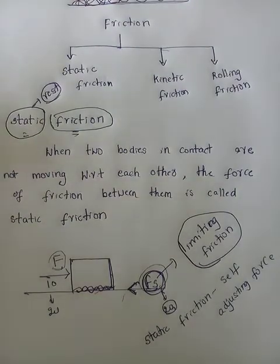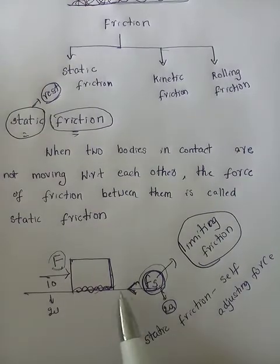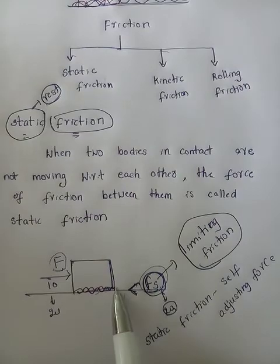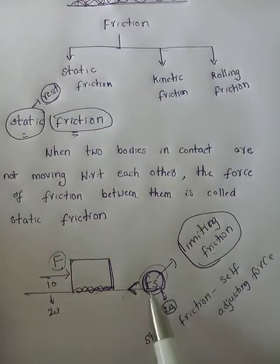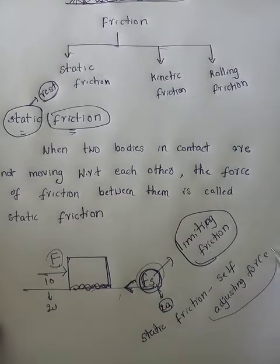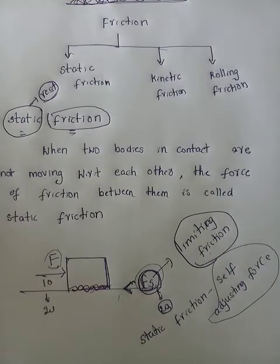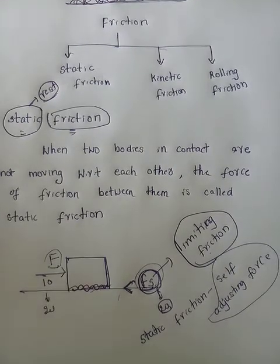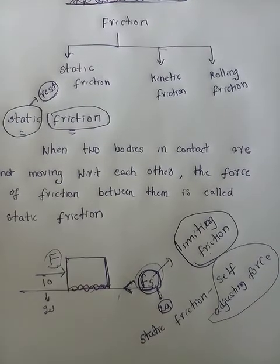Depending upon the applied force, the frictional force keeps changing — and that frictional force is static friction. That is why it is called a self-adjusting force. When you apply external force on any object, the friction also increases in the opposite direction and does not want to make it move. But this works only up to one limit — that limit is called limiting friction. The maximum force that can be opposed by the frictional force is called limiting friction. When the applied force exceeds this maximum friction, the body starts to move.